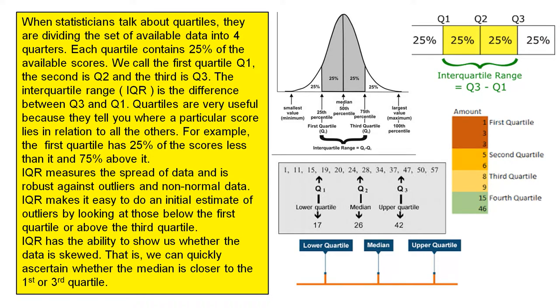IQR makes it easy to do an initial estimate of outliers by looking at those below the first quartile or above the third quartile.